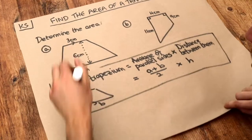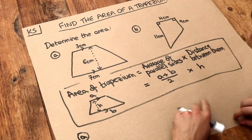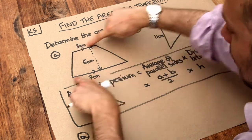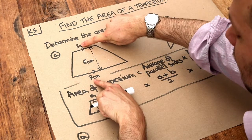So let's apply it to these two examples here. We want the average of the parallel sides so you want the average of these parallel sides here the average of three and seven.